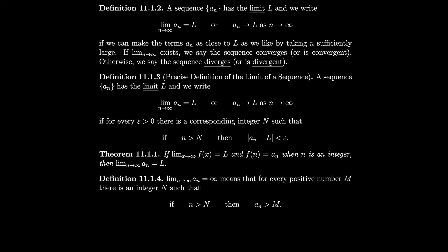A sequence an has limit L — written lim an = L or an → L as n → ∞ — if we can make the terms an as close to L as we like by taking n sufficiently large. This is essentially the same as the limit definition for functions in general, which makes sense since an is basically f(n) with integer inputs. If this limit exists, we say the sequence converges; otherwise it diverges.